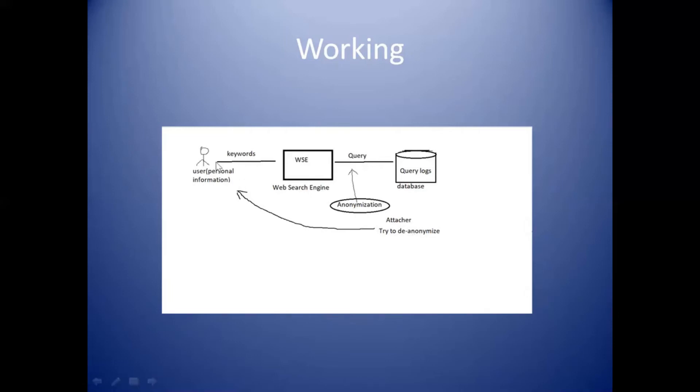To secure the user's personal information, we create some duplicate information for the users. If an attacker wants to de-anonymize the user information, only the duplicate information will be shown to the attacker, and the personal information of the user is kept hidden.